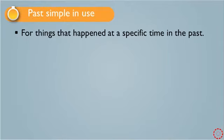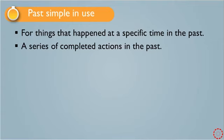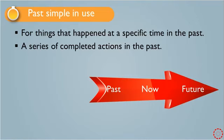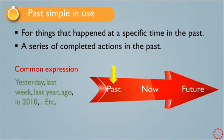We use past simple for things that happened at a specific time in the past, or we can say we use past simple for a series of completed actions in the past. Looking at this infographic, we have three different time periods: past, now, and the future. Common expressions we use with past simple include: yesterday, last week, last month, last year, and ago — for example, one week ago, two months ago, or five years ago — and also specific times like in 2010, and so on.